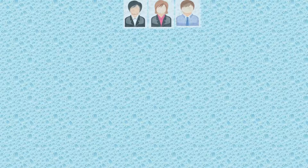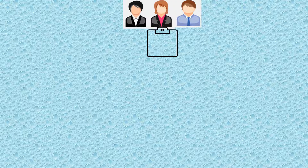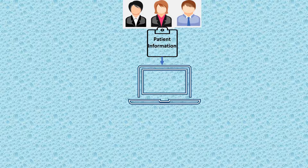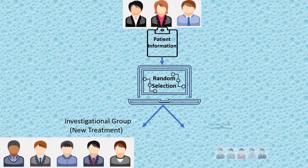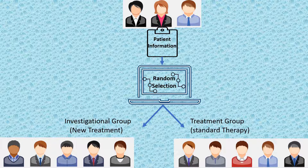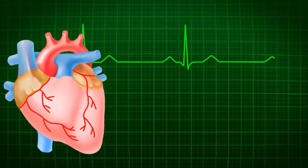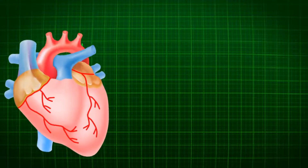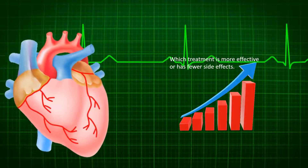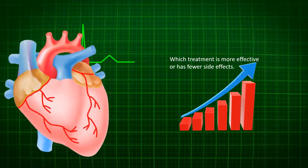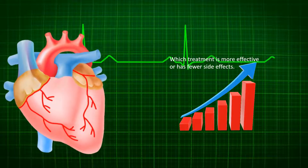In the simplest trial design, there are two groups. Patient information is collected using a computerized system. The system randomly assigns the individual to the investigational group that receives the new treatment, or to the control group that receives the standard therapy or placebo. At several points during and at the end of the clinical trial, researchers compare the groups to see which treatment is more effective or has fewer side effects.